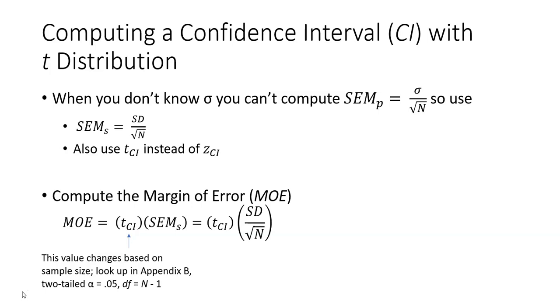When you're working with a T distribution, something slightly changes when you are computing the 95% confidence interval. And that's what I'm going to show you right now.